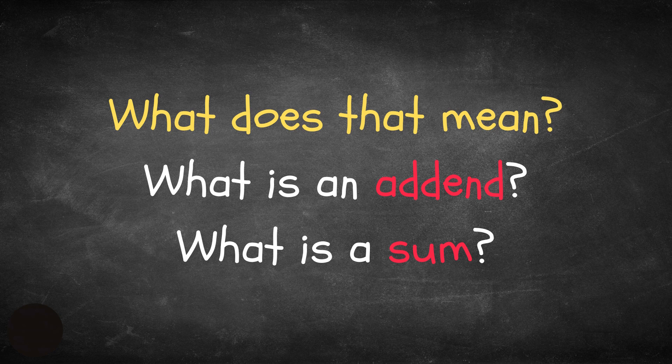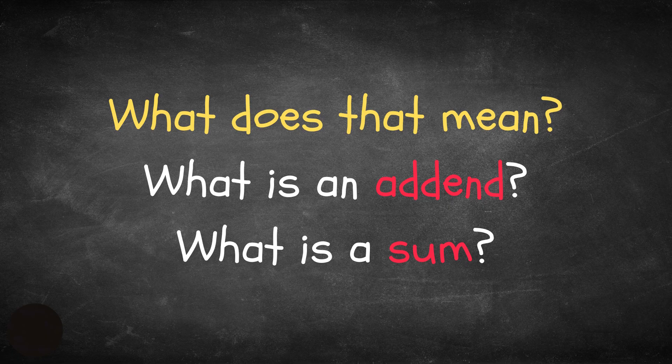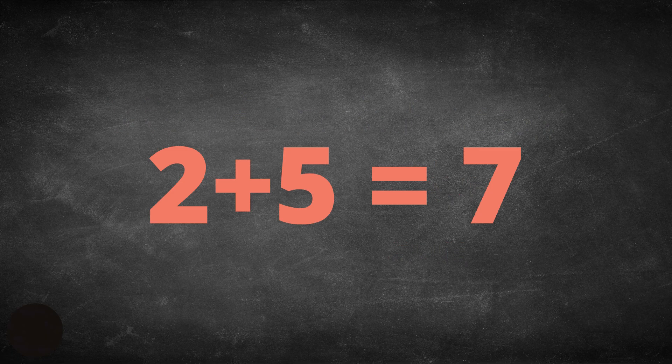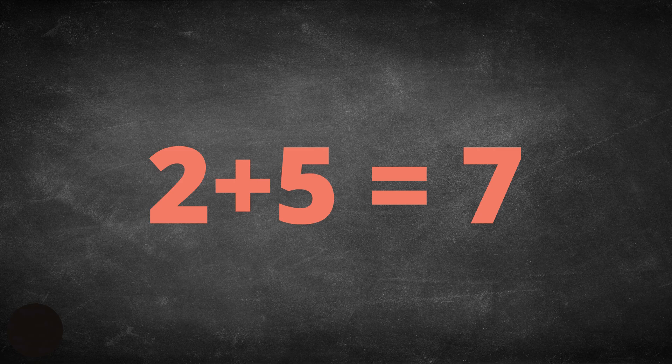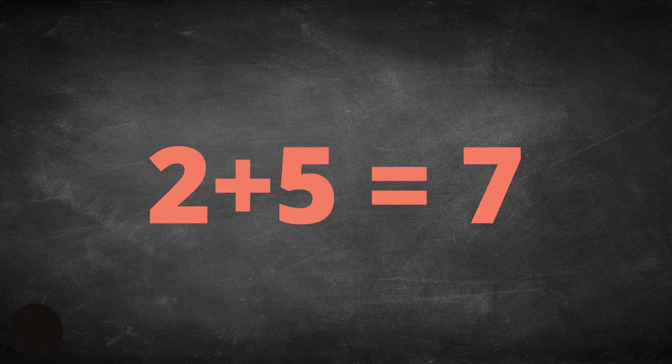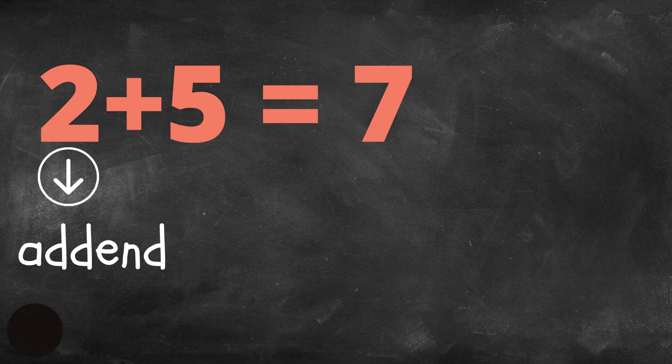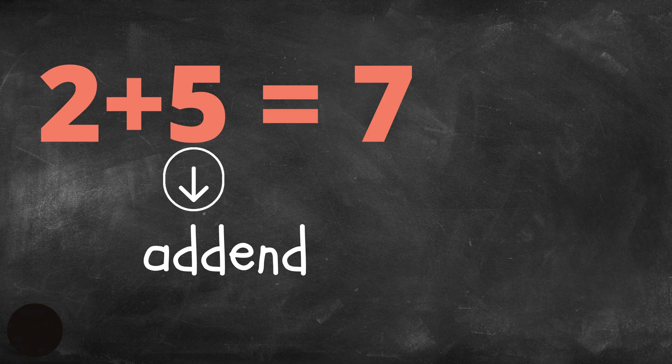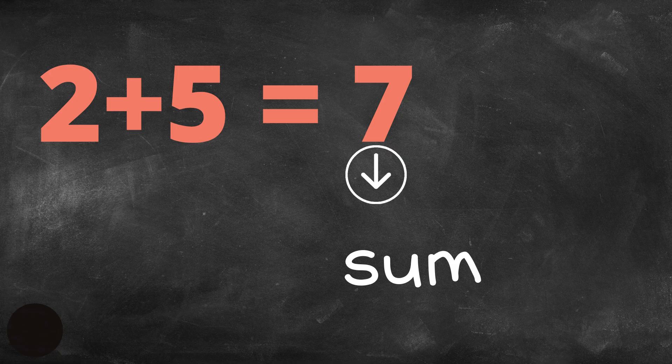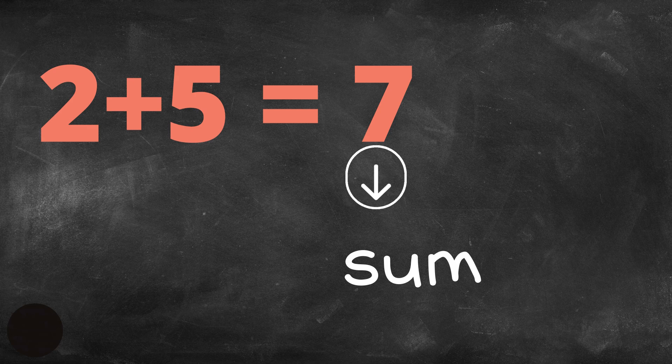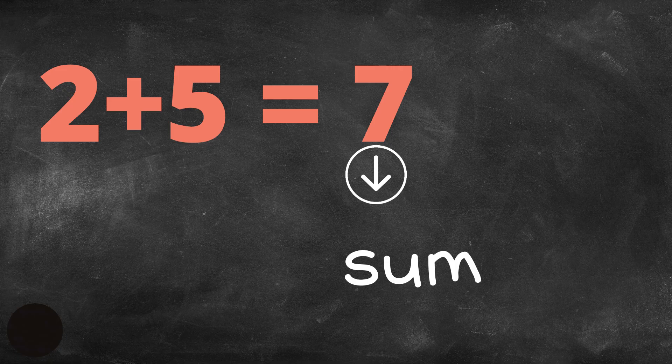What does that mean? What is an addend? What is a sum? Let's look at this example: 2 plus 5 equals 7. The digit 2 is an addend. The digit 5 is also an addend. And the digit 7 is the sum, which is the total of this addition problem.